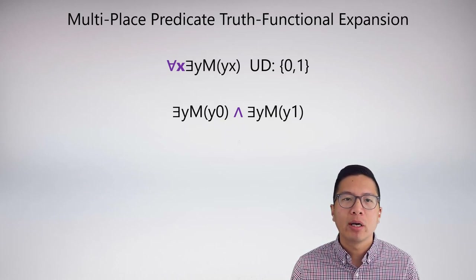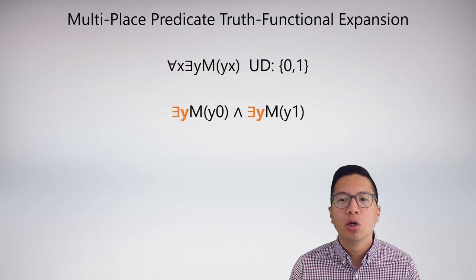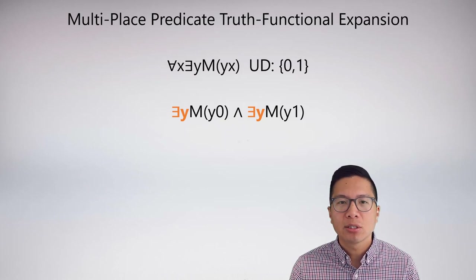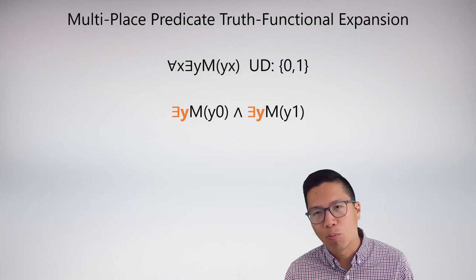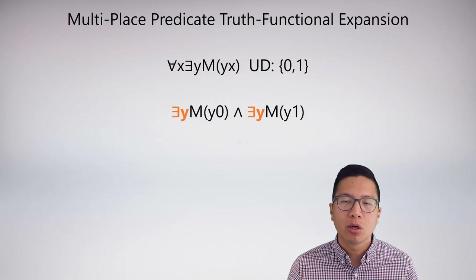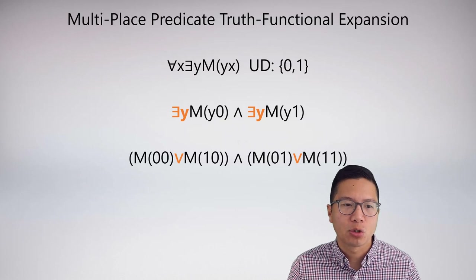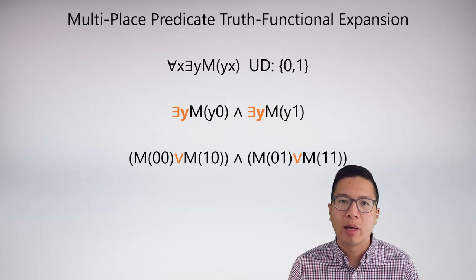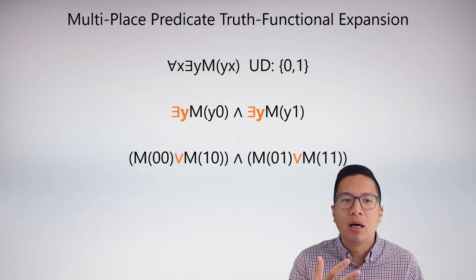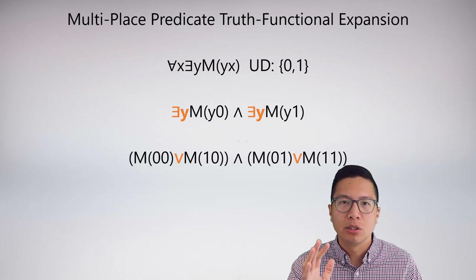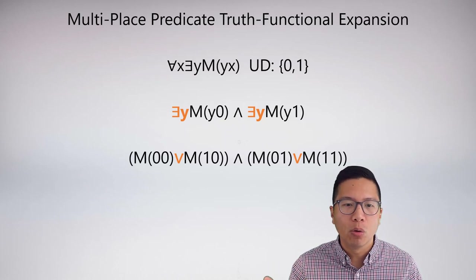At this point I'm ready to expand the existentials, and I can do them at the same time now that I'm more comfortable with truth-functional expansion. The existential means I expand what's under the scope — M(y,0) and M(y,1) — expanding to 0 and then to 1. Existentials expand to disjunctions. So I get M(0,0) or M(1,0) as the left conjunct, and M(0,1) or M(1,1) as the right conjunct, related to the second existential statement. That's the expansion.